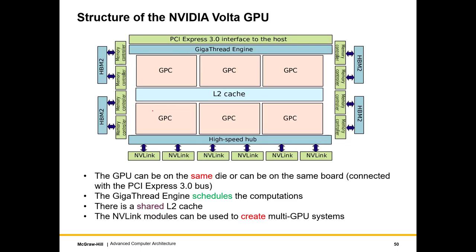Let's take a look at the structure of the NVIDIA Volta GPU. GPUs are typically large chips with a large number of computing elements. The first component to note is the PCI Express interface with the host — in this case the CPU. The CPU and GPU typically communicate via an external bus which is a PCI Express 3.0 interconnect. Every GPU task, whether general purpose or graphical, is a thread. The GPU has an internal thread manager and thread scheduler known as the Giga Thread Engine — think of this as the brain of the GPU.